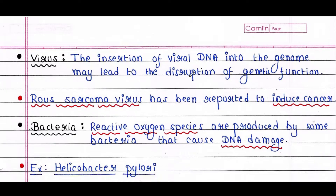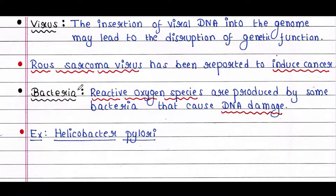Regarding viruses, the insertion of viral DNA into the genome may lead to the disruption of genetic function. Ras sarcoma virus has been reported to induce cancer. As for bacteria, reactive oxygen species produced by some bacteria cause DNA damage — Helicobacter pylori is one such bacterium.